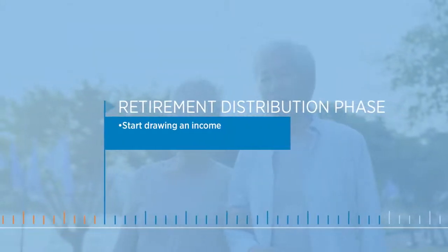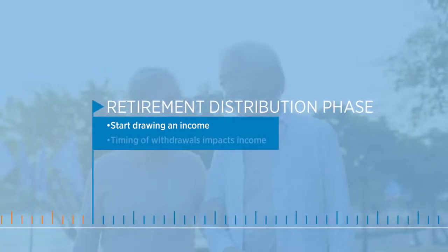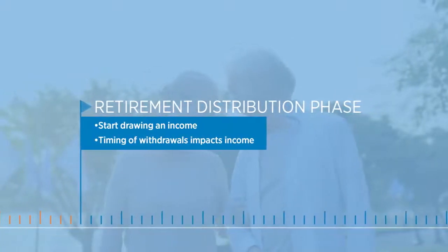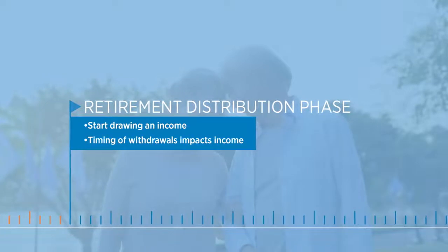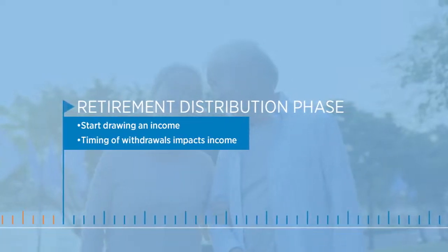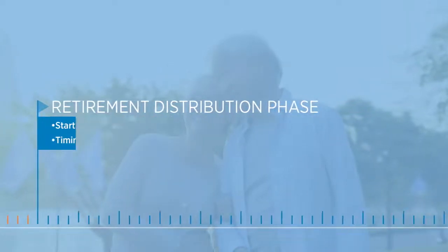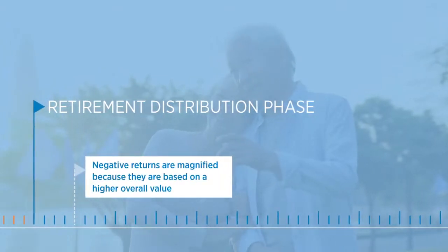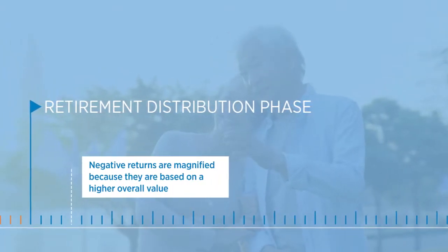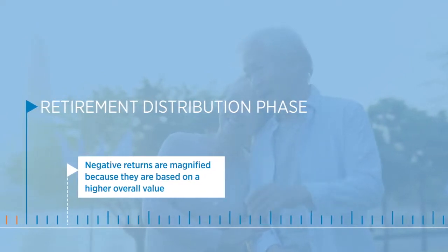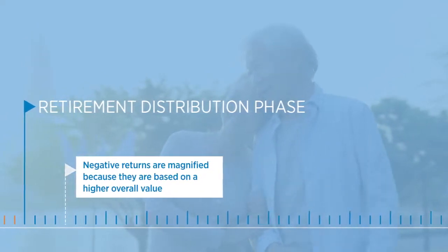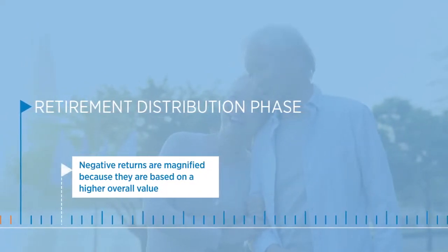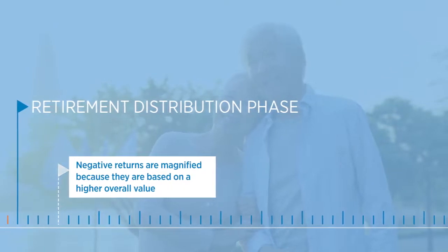Once you enter the retirement distribution phase and start drawing an income, market fluctuation and sequence of returns become a risk factor, making the timing of your withdrawals more important because it can impact the amount of income you receive in retirement. At the beginning of this phase, negative returns are magnified because they are based on a higher overall value without time to recoup those downturns in the market, especially as you continue to take withdrawals. This can have a lasting negative effect.